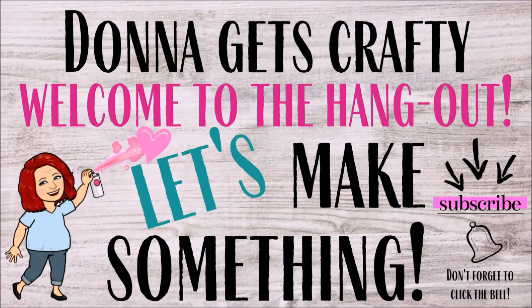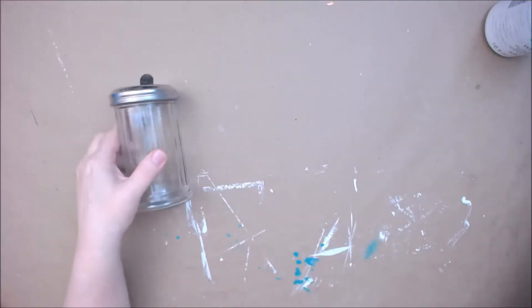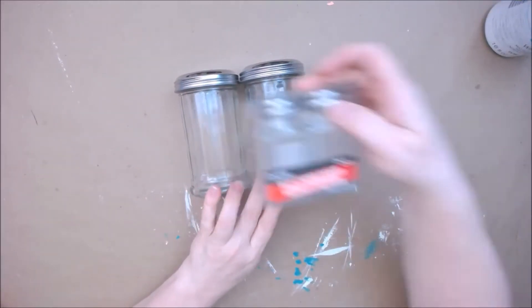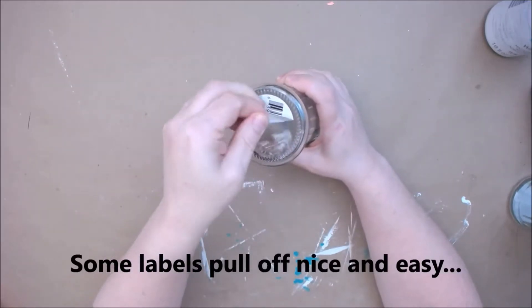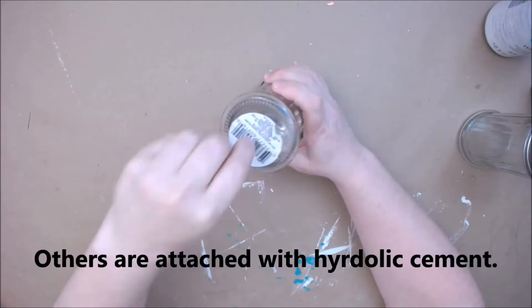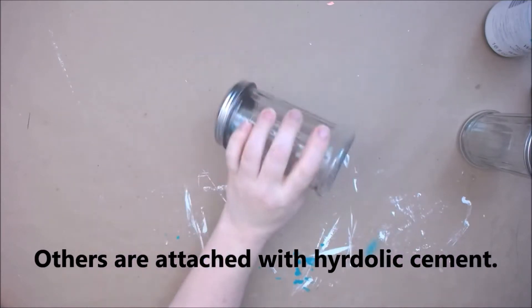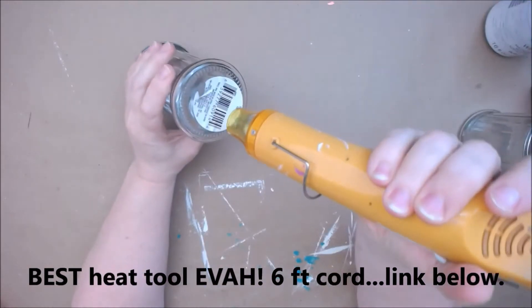Hey guys, welcome to the hangout with Donna Gets Crafty. Let's go make something! Starting with a sugar bowl, cheese shaker, and salt and pepper shakers from the Dollar Tree. I'm removing the stickers - sometimes they're stuck on like hydraulic cement, so I use a heat gun to soften the glue. It peels off nice and easy.